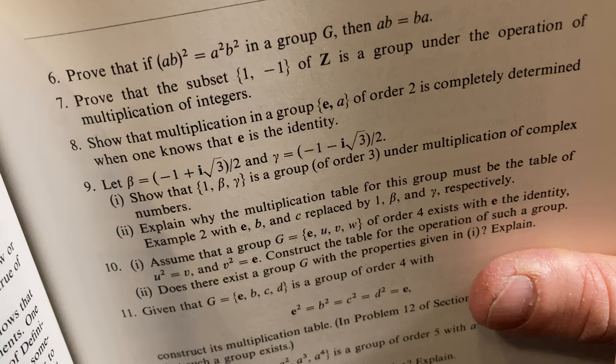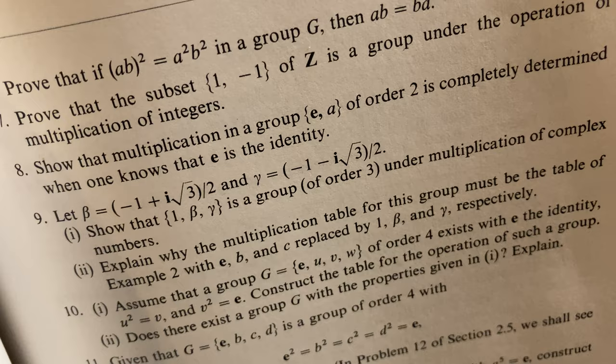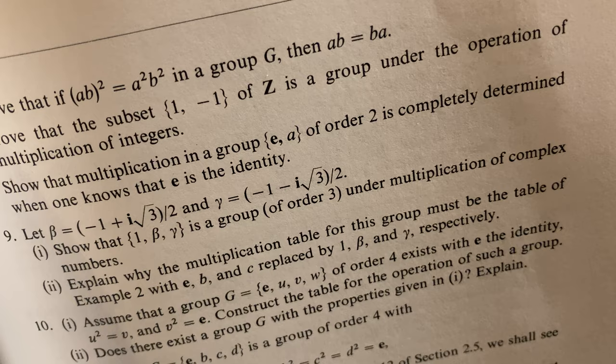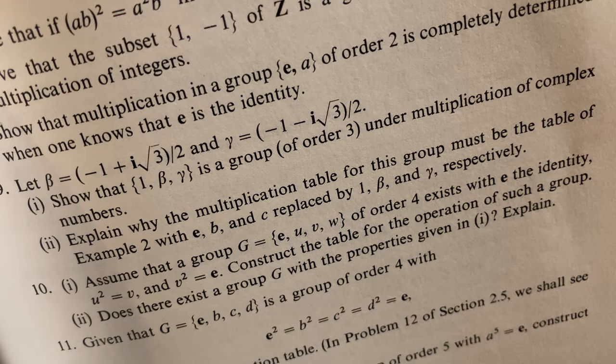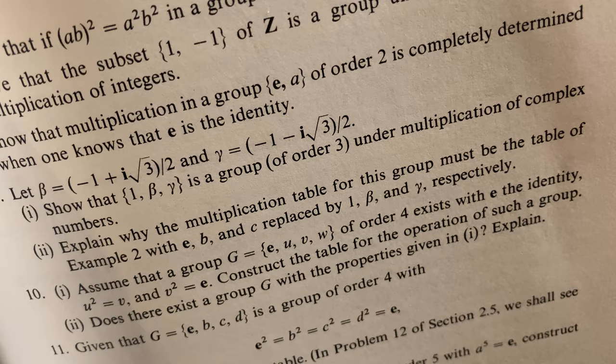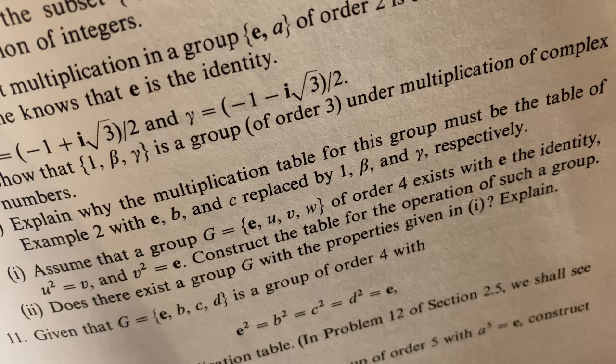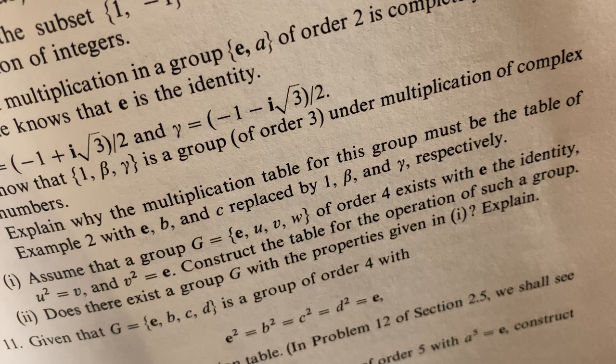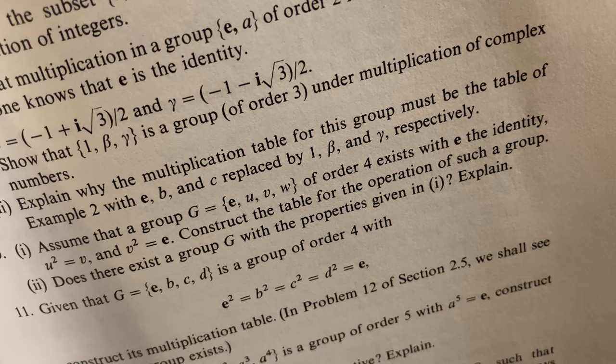Show that the multiplication is associative and show that every element has an inverse, and then there you go, then it's a group. So yeah, it's pretty cool. Show that the multiplication in a group {E, A} of order two is completely determined when one knows that E is the identity. Hmm, interesting. And here we have some complex numbers beta and gamma, and we have to show that that's a group of order three under multiplications of complex. That's pretty interesting, right? That's pretty cool. Going through it slowly. Explain why the multiplication for this group must be the table of example two with E, B, and C replaced by one, beta, and gamma respectively. Interesting.